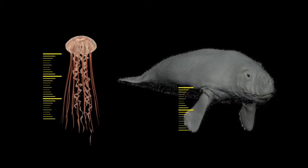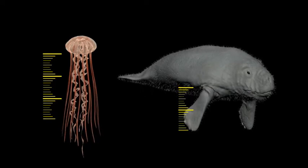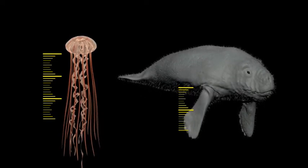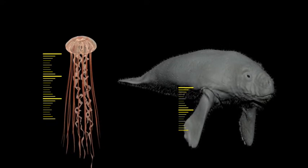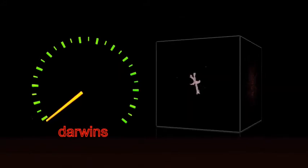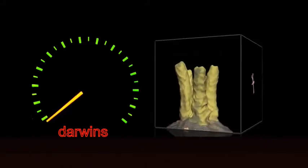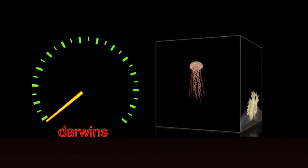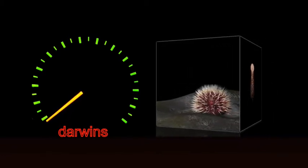It describes how fast some aspects or characteristics of an organism changes. One Darwin is a factor of 2.7 every million years. This factor is often used to evaluate whether there has been enough time since the beginning of life on Earth for the evolution of all the species who have ever lived.